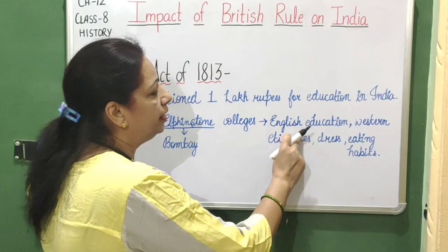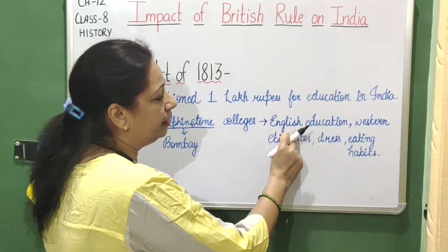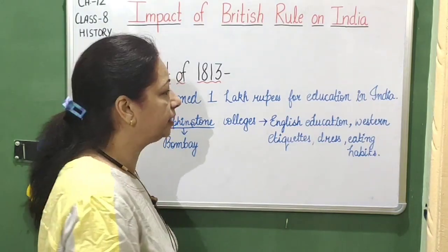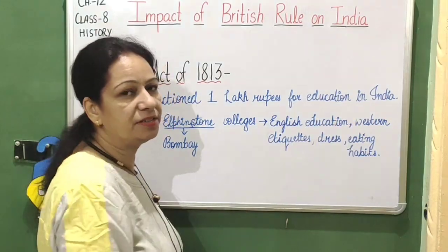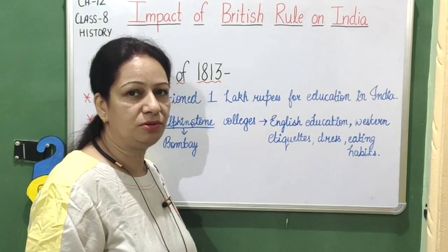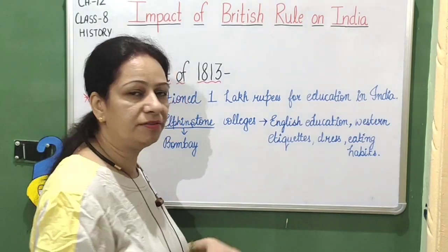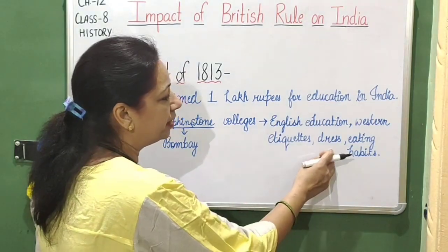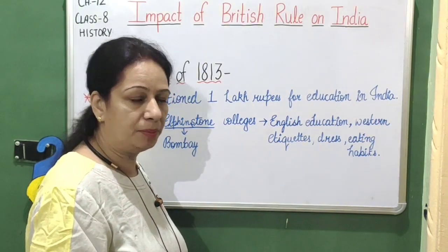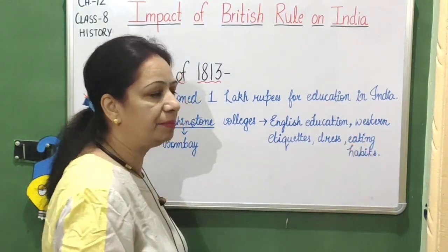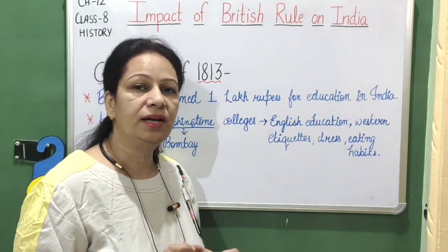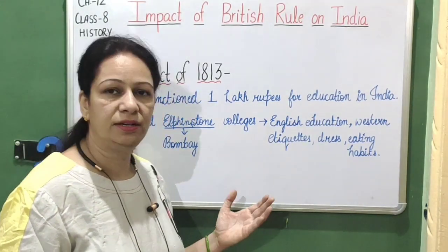In Hindu College and Elphinstone College, English education was mainly imparted. Western etiquettes — meaning Western culture — was taught, along with Western dress and eating habits. These were the main teachings given in these colleges and schools during the Charter Act.